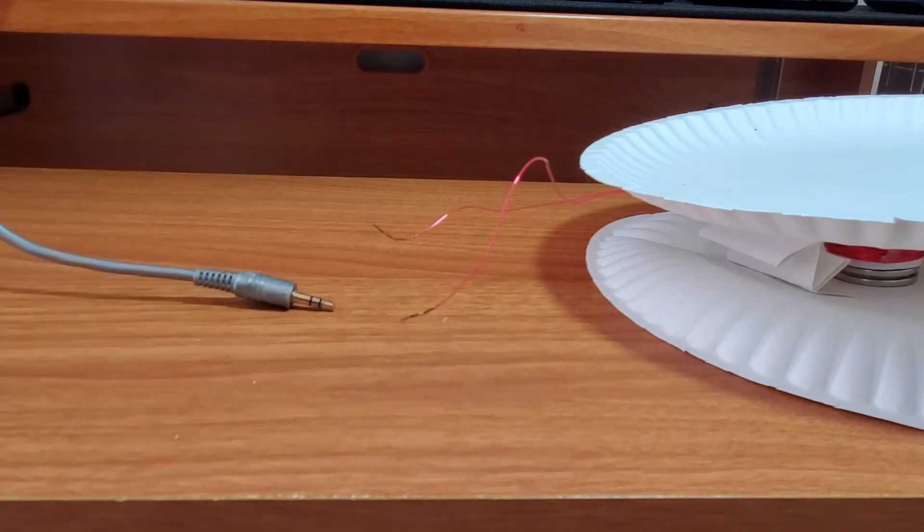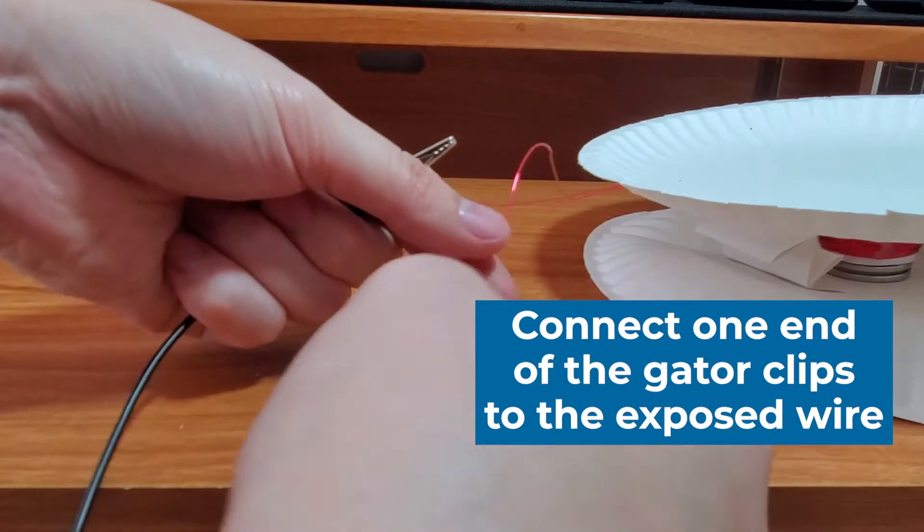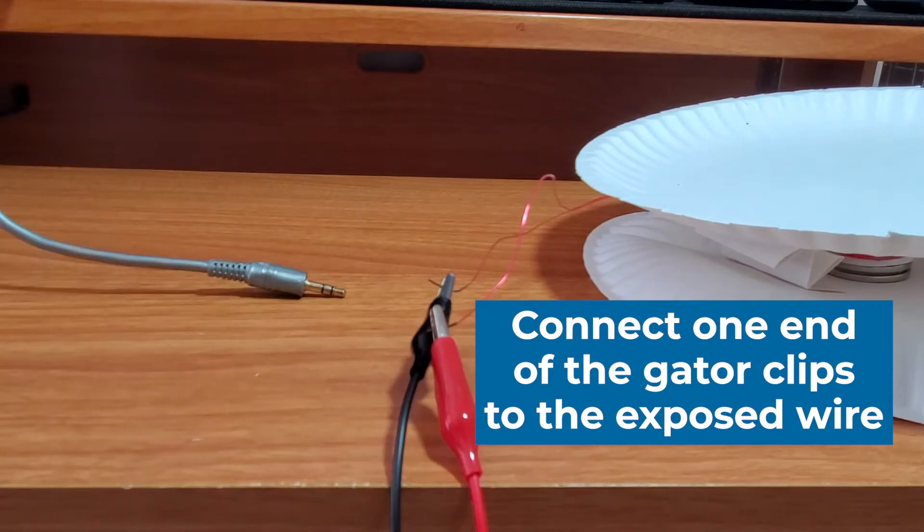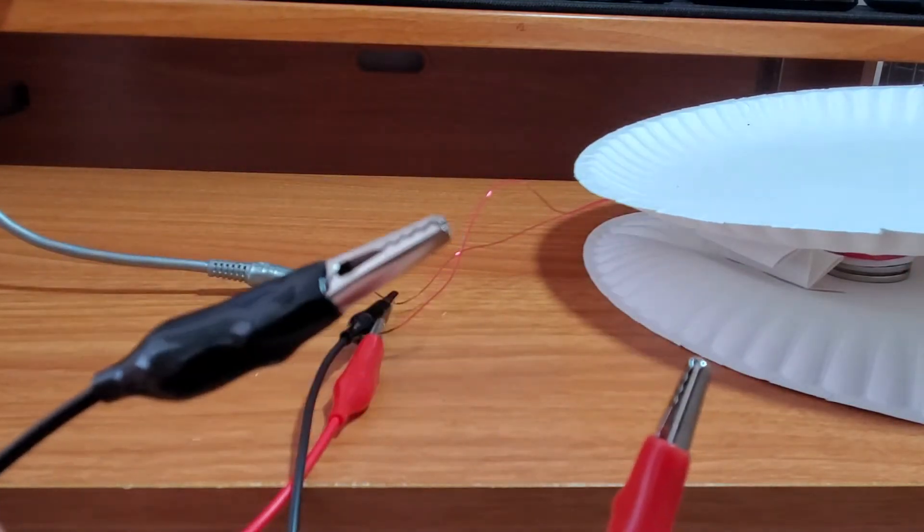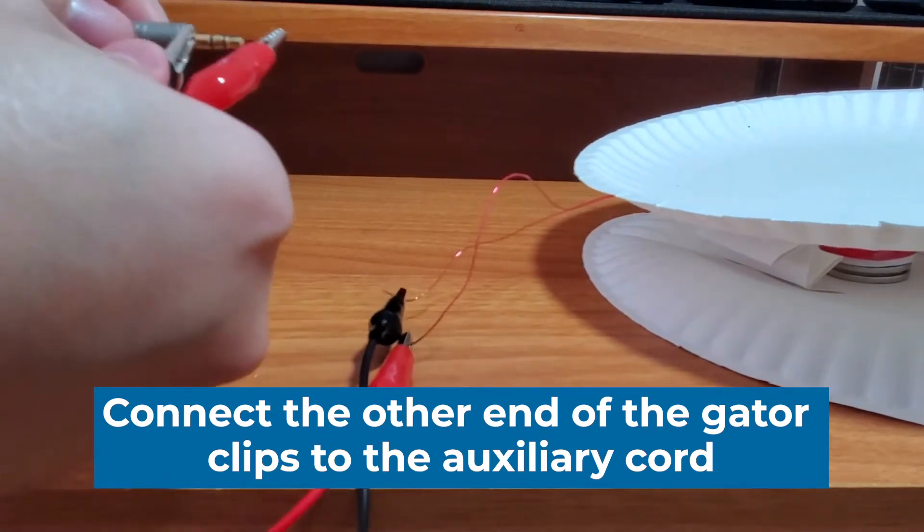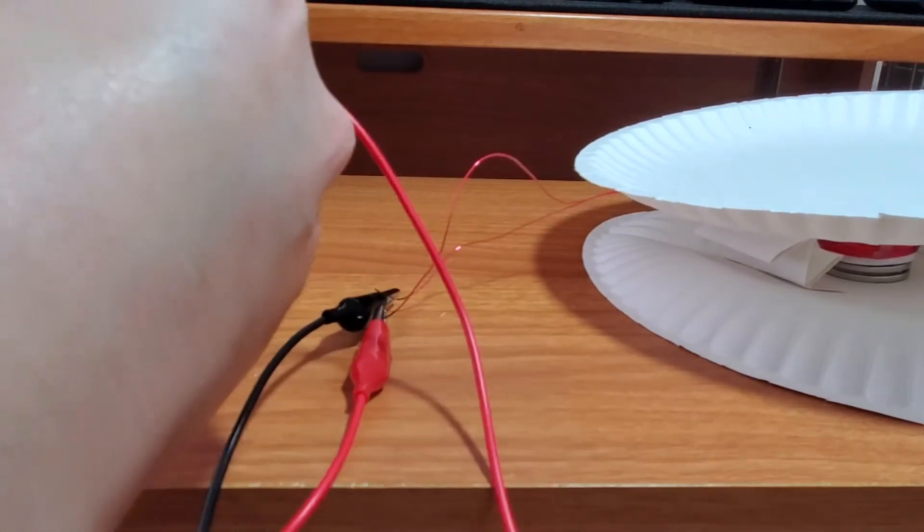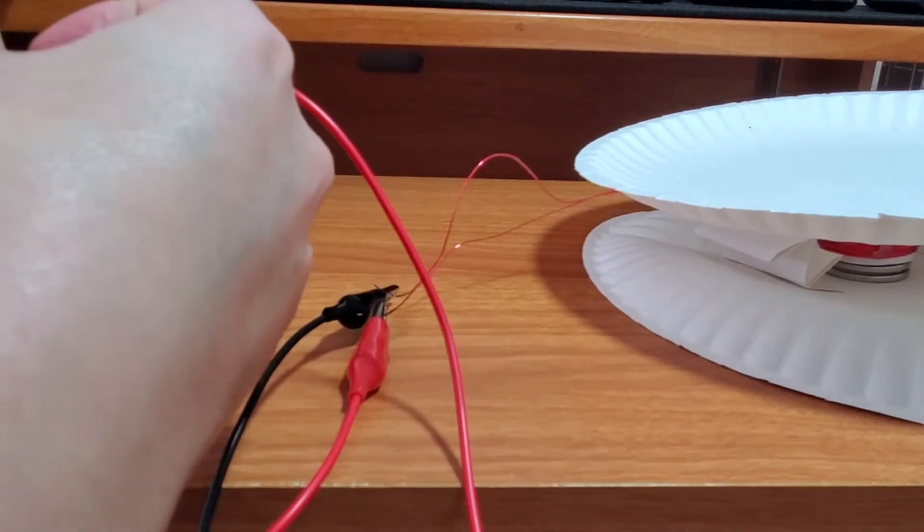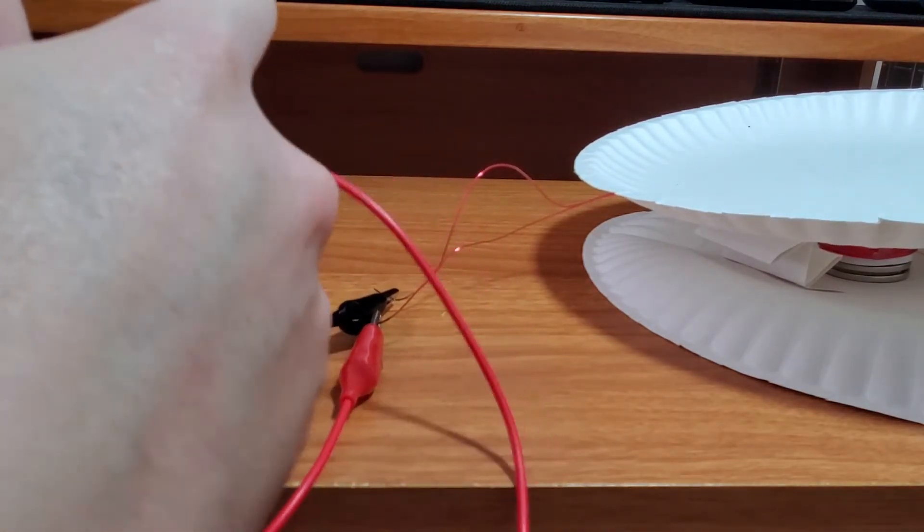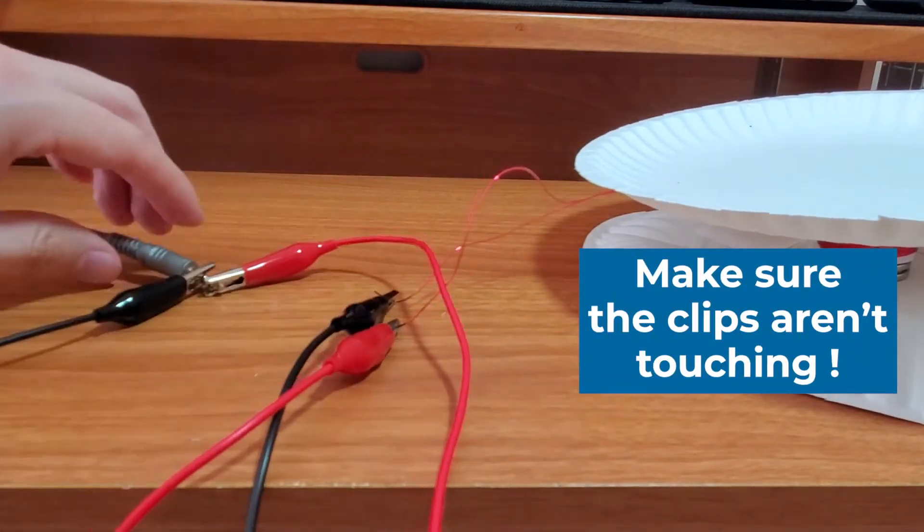So what I'm going to do is hook up my two different gator clips to each of our lead wires. And then I'm going to hook the other ends onto our auxiliary cable. We want to make sure that there's a good strong connection on our auxiliary cable. So just make sure that the gator clips are biting nice and tight. And I like to put them on two different little ends here. So you can see and make sure that they're not touching. Now you can go ahead and test your speaker.